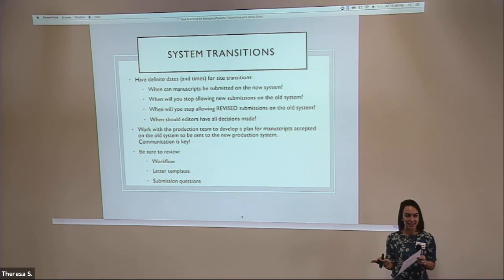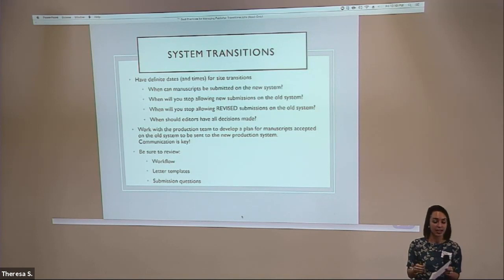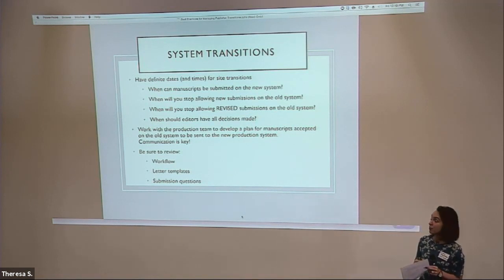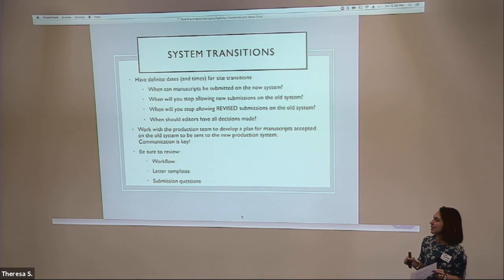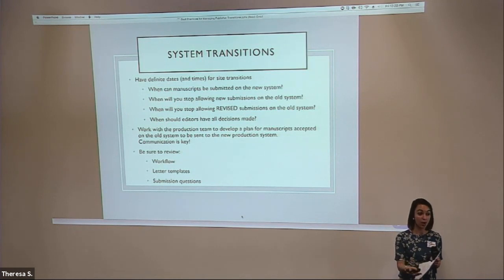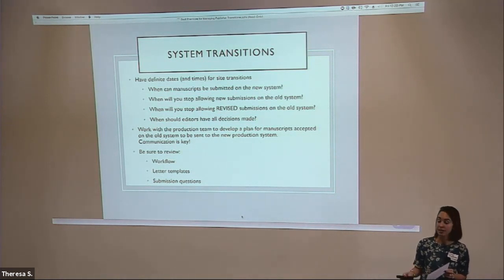I've seen some journals do everything they can in the old system, and some journals will go ahead and submit in the new system because that's easiest for production of the new publisher. There are a lot of different ways it can be done. My biggest advice is to have a plan, especially when it comes to your timeline. And that's another opportunity for communication with your authors — letting them know about the new system and what the plan is for their revision and for production and publication of their article.